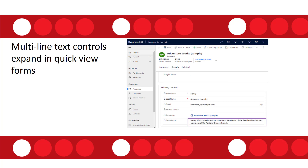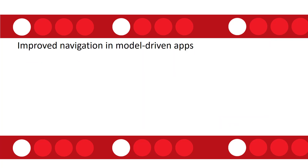Quick view forms that have multi-line fields in them are going to automatically be expanded now. Previously you had to scroll down if there was a lot of data in that field, but those are going to be expanded by default. There will also be some major improvements to navigation in model-driven apps in Dynamics 365. Based on the Microsoft Docs site, there's talk about a page side pane that will allow another page to be open to the far right side of the current page. I'll write another article and do a video on that as soon as more details become available.